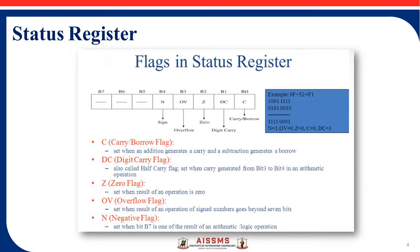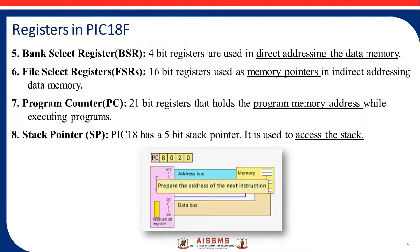Next is the zero flag, which is set when the result of an operation is zero. Then the overflow flag — when results are generated into 17-bit or 18-bit numbers, an overflow flag is generated and that information is stored in the overflow flag. Then N means the negative flag — if any negative result is generated while performing arithmetic and logic operations, that information is stored in the N flag. So these are the flags in the status register.